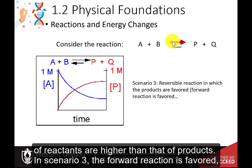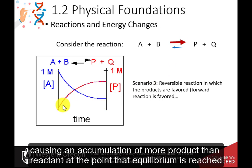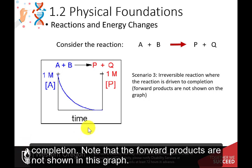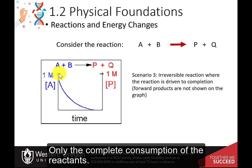In scenario three, the forward reaction is favored, causing an accumulation of more product than reactant at the point that equilibrium is reached. We will also find that some reactions are irreversible in nature and are driven to completion. Note that the forward products are not shown in this graph — only the complete consumption of the reactants.